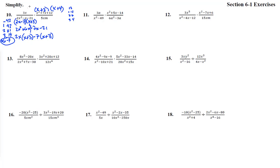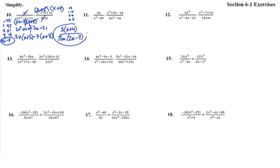Now everything on top is factored. We can cancel the (x + 3)'s, and the x's cancel too. We're left with 3(x + 4) over 5m(2x − 7). That looks good.